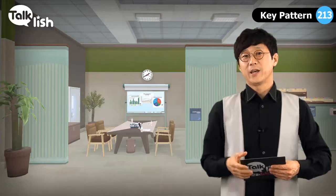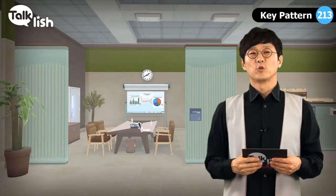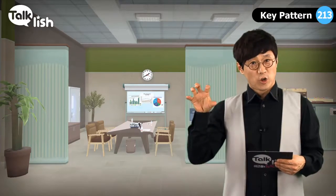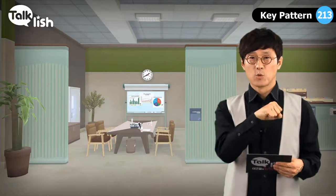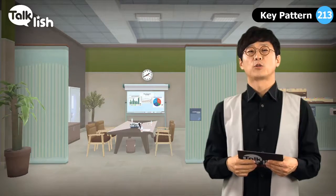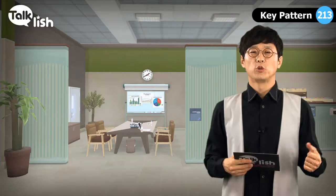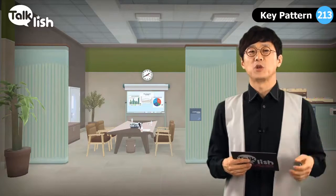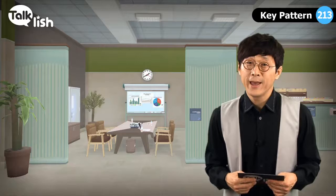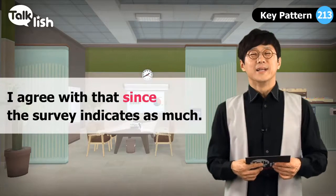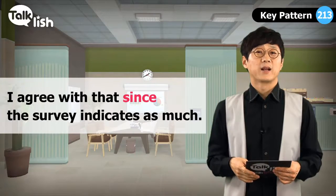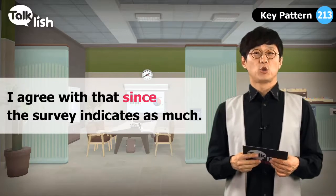우리가 앞뒤로 정리하는 내용들을 보면 주로 접속사가 많이 나옵니다. 어떤 개념과 개념, 동작과 동작을 연결시켜주는 것이 접속사죠. 지난번에 배웠던 though, if, as, that도 있는데, 오늘은 '뭐뭐이기 때문에'라는 뜻의 since를 배워볼 거예요. since는 '뭐뭐한 이래로'라는 뜻도 있지만 어떤 이유를 밝혀줄 때도 많이 씁니다.